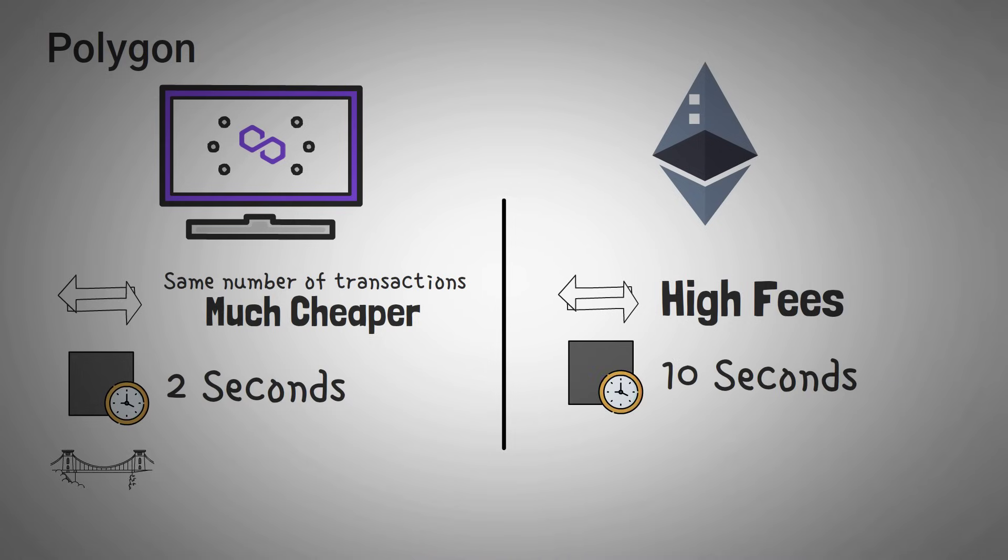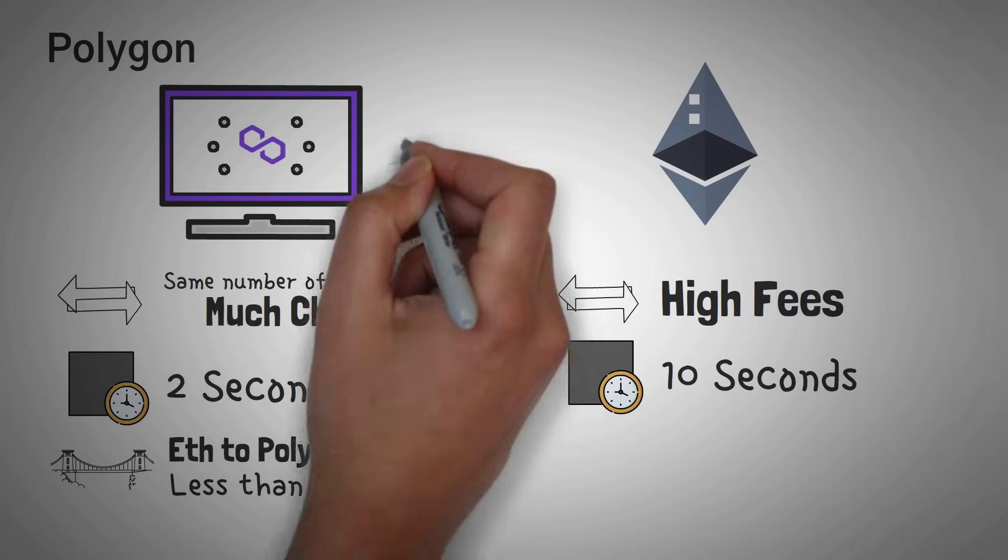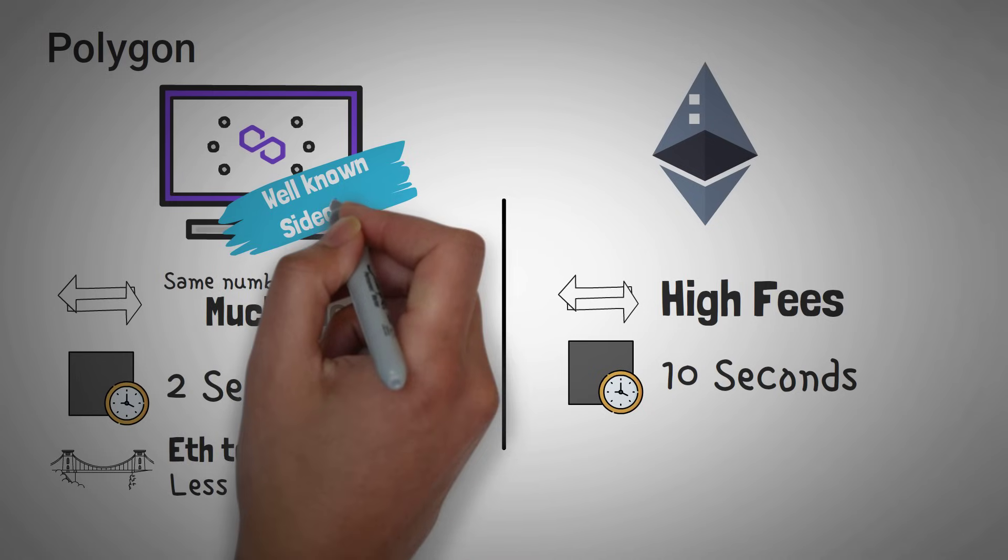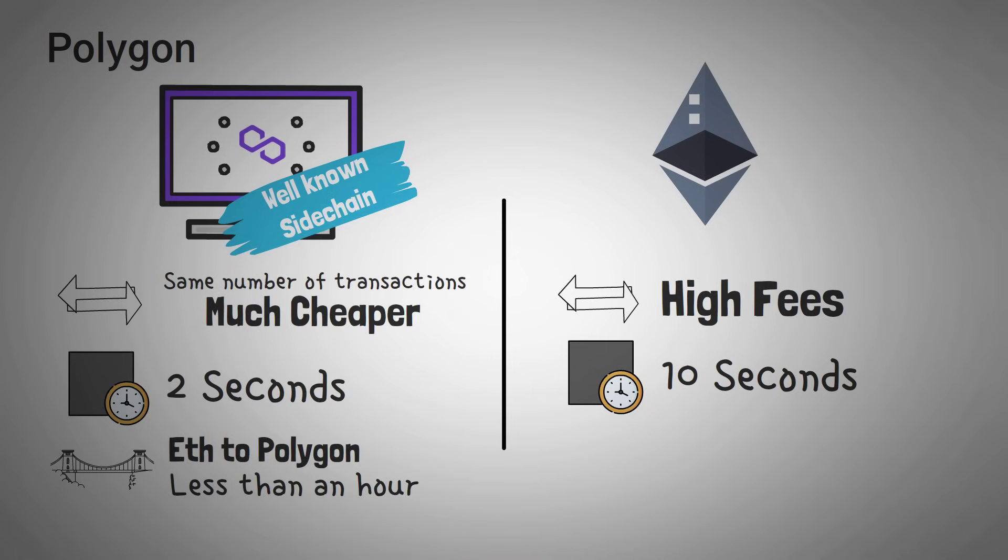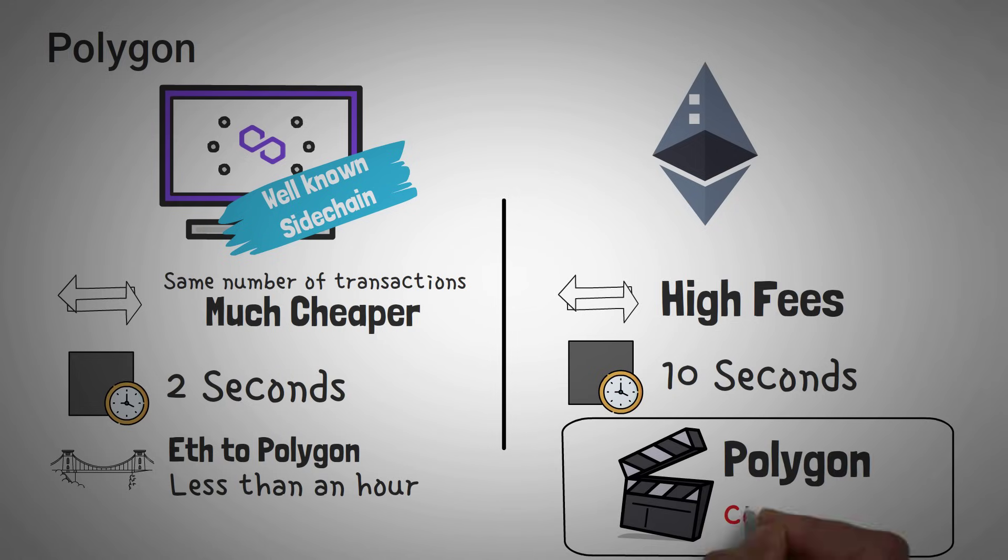The block time on Polygon is 2 seconds, compared to Ethereum's 10 seconds. Using the Matic bridge, you can move assets from Ethereum to Polygon in less than an hour at any time that you want to. You can also move them back. Polygon is one of the most well-known sidechains due to its mass adoption and ability to interact with Ethereum. We actually have a whole video on Polygon coming up, so get ready to watch that video.